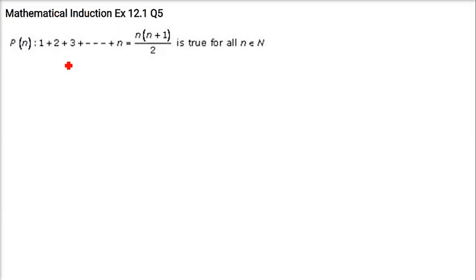Give an example of a statement P(n) such that it is true for all n belongs to natural numbers. So here is an example: 1, 2, 3 till n natural number. The sum is n(n+1)/2. You can check it for any number.